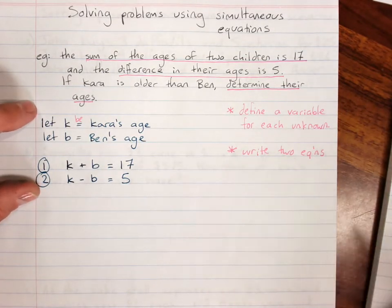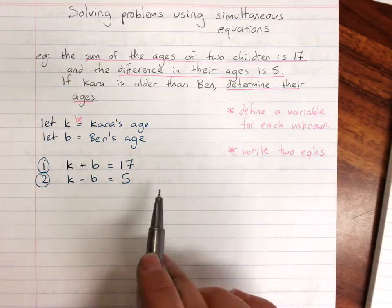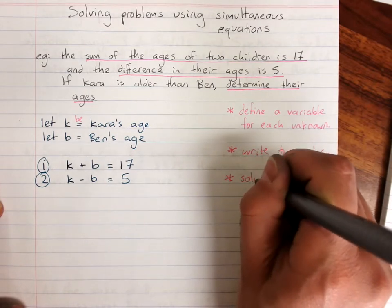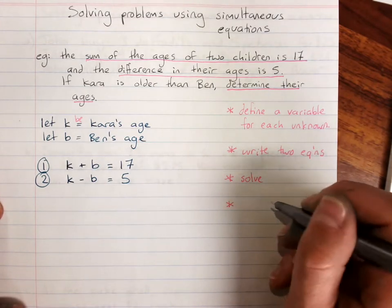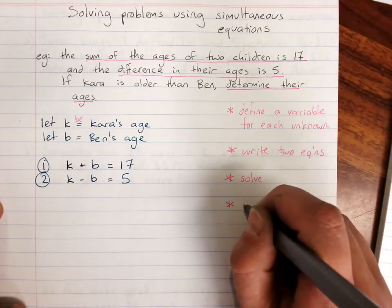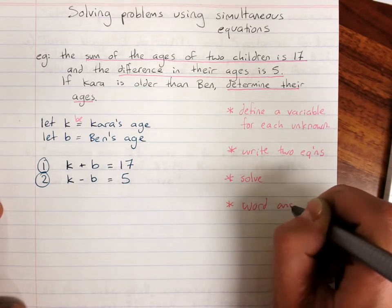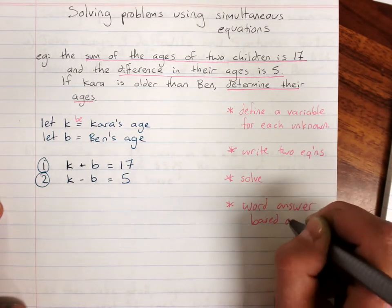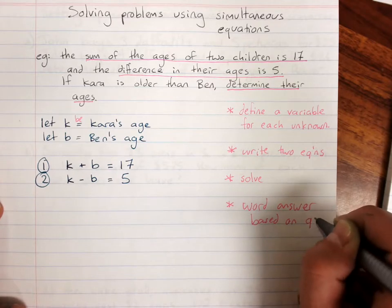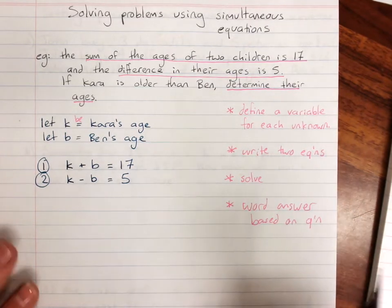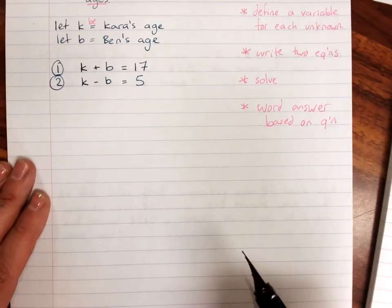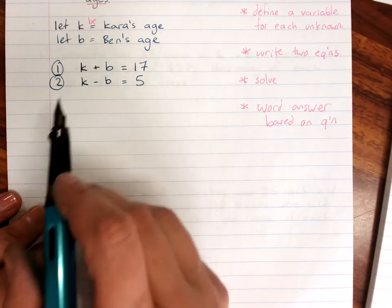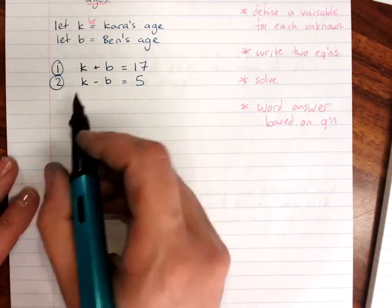This is the tricky bit. You can solve these equations. You're good at that. At least I hope you are by now. So you solve and you must present your solution in words. And that's based on exactly the question that they asked you. So let's quickly work through this one. I could use substitution if I rearranged one or I could use elimination. I'll just do a rearranging.